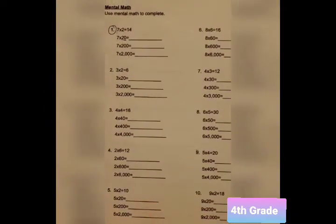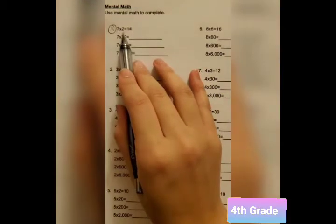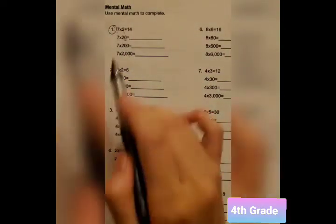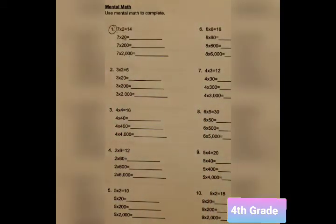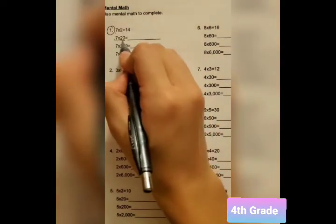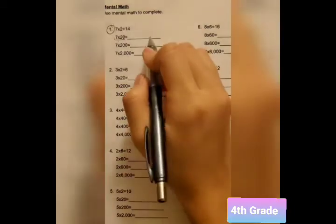On the next page, we got the mental math. And for question number 1, it shows us that 7 times 2 equals 14. However, we've got to solve the problem 7 times 20, 7 times 200, and 7 times 2,000. Now, a trick to this is that because you already know what 7 times 2 is, all you need to do is add 0 to the very back.